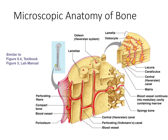Our last topic is the microscopic anatomy of bone, and specifically we're going to be looking at the microscopic anatomy of compact bone. So let's say we were to take a chunk of bone out of the diaphysis of a long bone and magnified it — you'd see something that looks like this. We've got this sort of cake slice-shaped chunk of bone. On the outer surface we have our periosteum, that's attached to the compact bone.